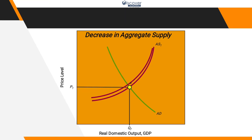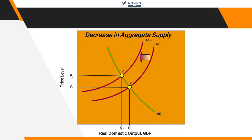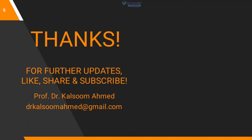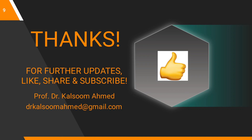Cost-push inflation happens when the aggregate demand curve remains stable but the aggregate supply curve shifts backward. This occurs because quantity is a function of labor, capital, technology, and natural resources. If input prices rise, firms can produce less output, reducing supplies. This negative shift of the supply curve causes cost-push inflation. That was all for today's lecture — if you liked the video, please like, share, and subscribe.